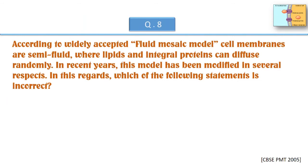According to the widely accepted fluid mosaic model, cell membranes are semi-fluid, where lipids and integral proteins can diffuse randomly. In recent years, this model has been modified in several respects. In this regard, which of the following statements is incorrect?